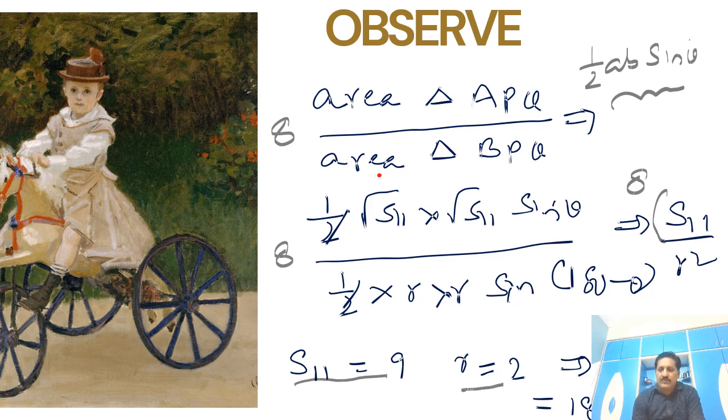So therefore 8 times of this is 9 by r² means 4 here. This I can cancel 2 times, so therefore the answer is 18. I think this is the best way you can attempt the given question.